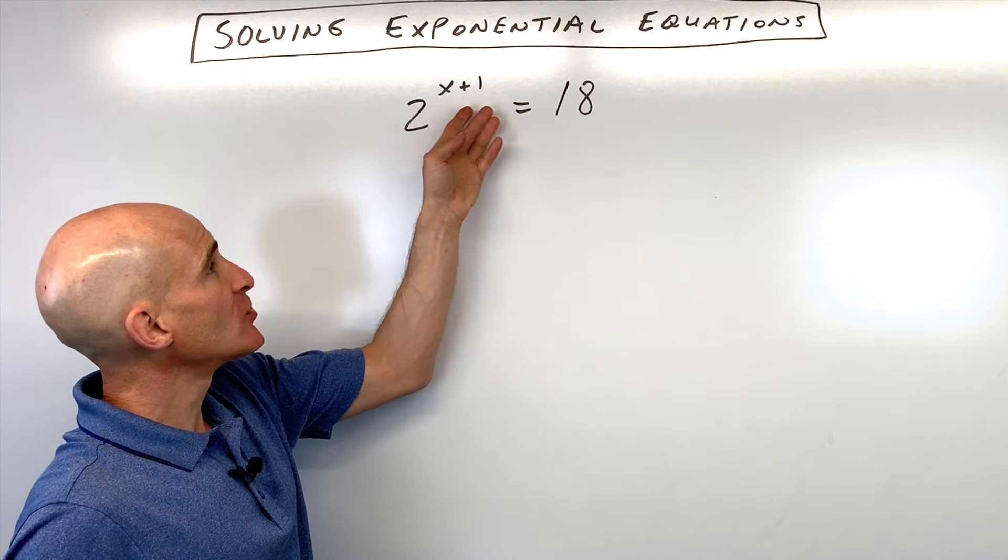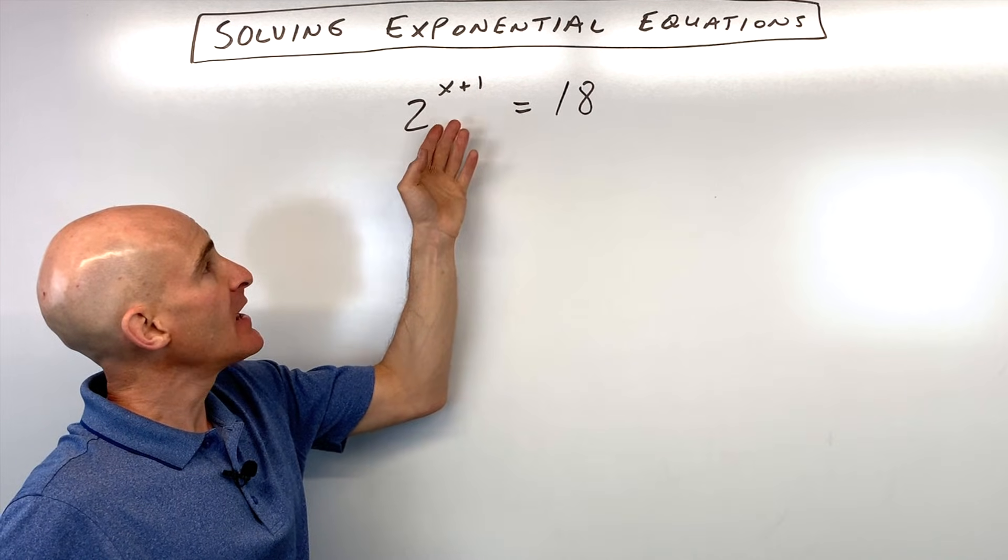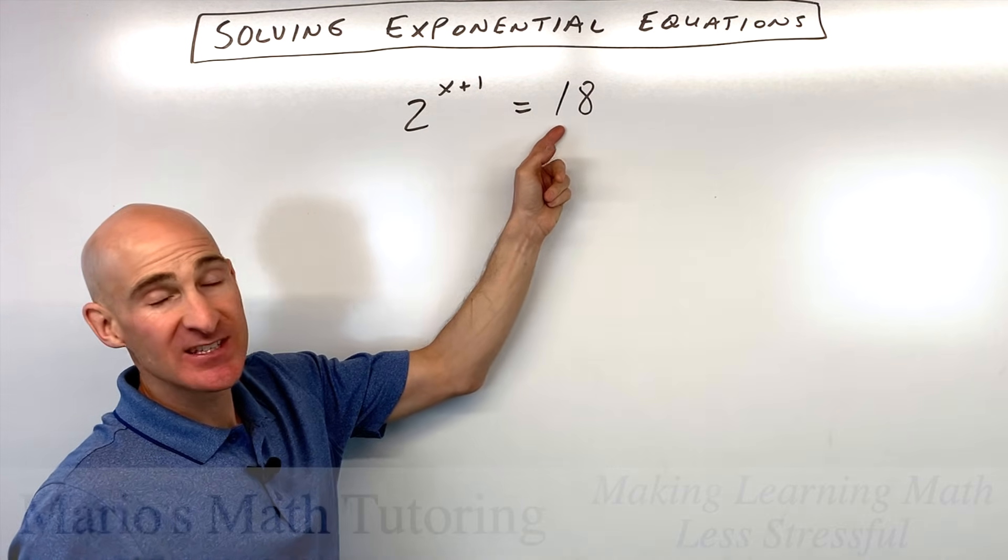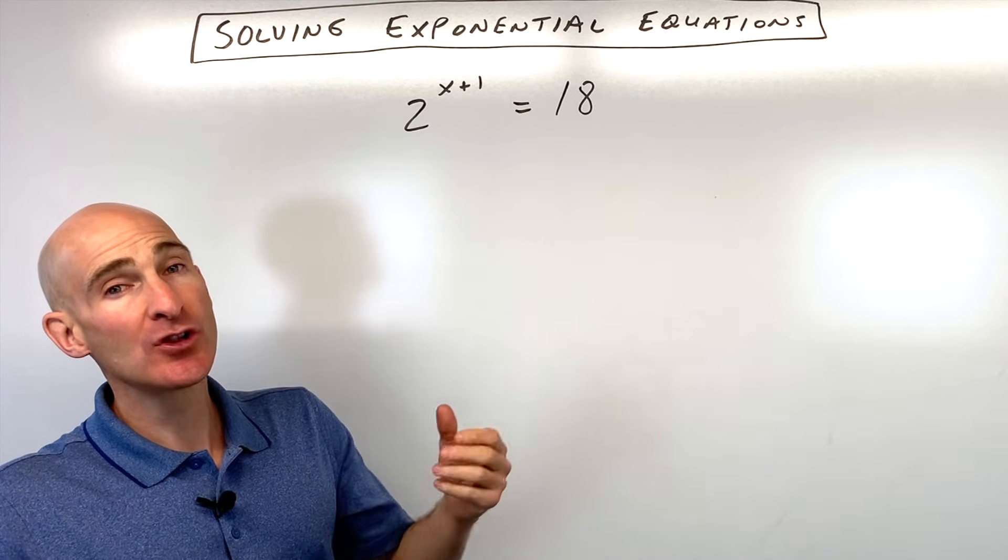We're given this exponential equation with a variable in the exponent. The first thing you can try to do is get the bases to be the same, but 2 and 18 don't really have a common base, so we're going to have to use logarithms.